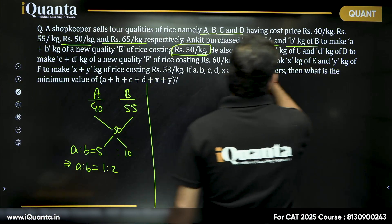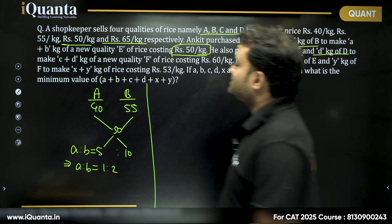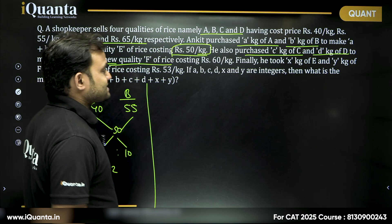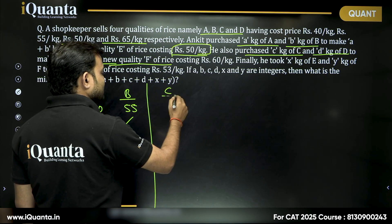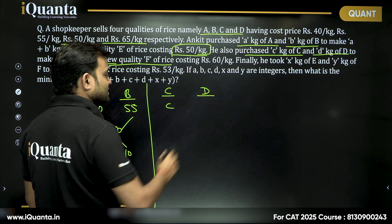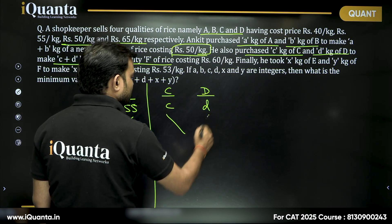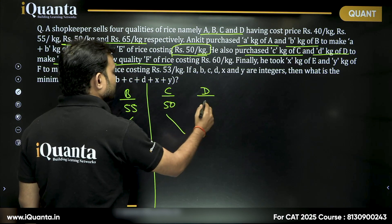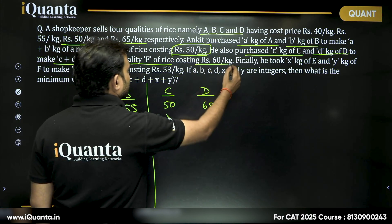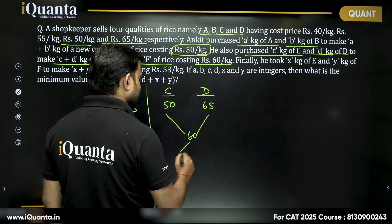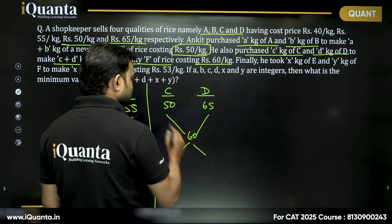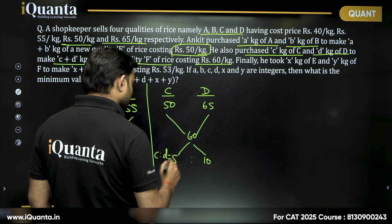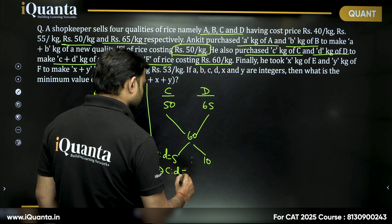Then it says he also purchased c kg of C, d kg of D to make c+d kg of a new quantity F costing Rs. 60. So again, we will take C rice and we will take D rice. It is given that c kg of C and d kg of D, taking these two together. So the prices are 50 and 65. Taking these two together, we are making rice F which is costing 60. Then again, 65 minus 60 is 5, 60 minus 50 is 10. We get C is to D, the quantity C is to D is equal to 5 is to 10 again, or C is to D is 1 is to 2.